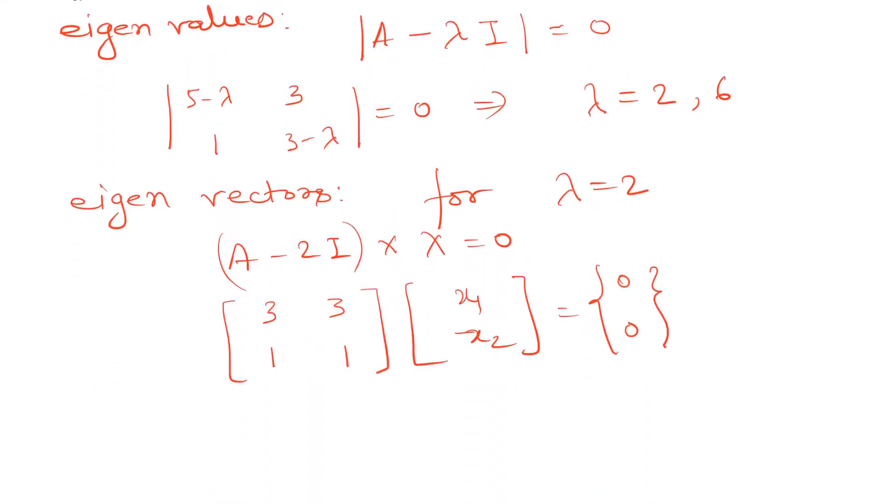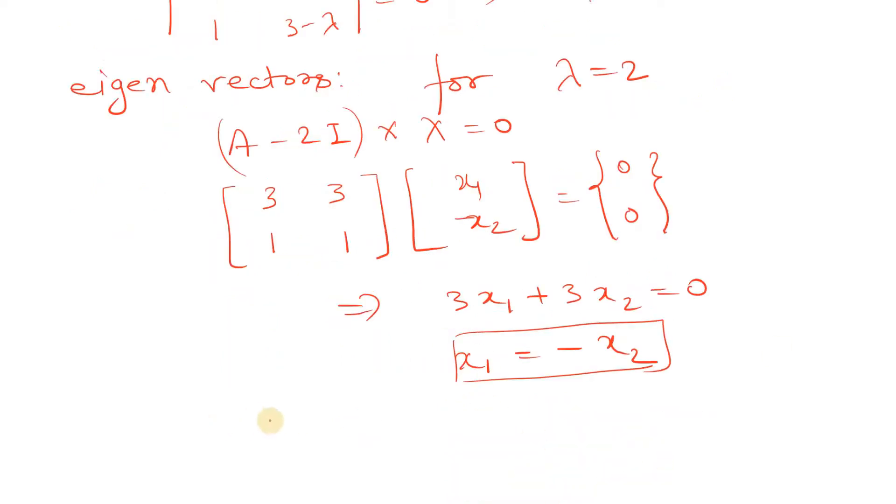From here, if we solve this, we'll get 3x1 plus 3x2 is equal to 0, which means x1 is equal to negative x2. So these are the eigenvectors, x1 and x2. The eigenvector is 1, minus 1.